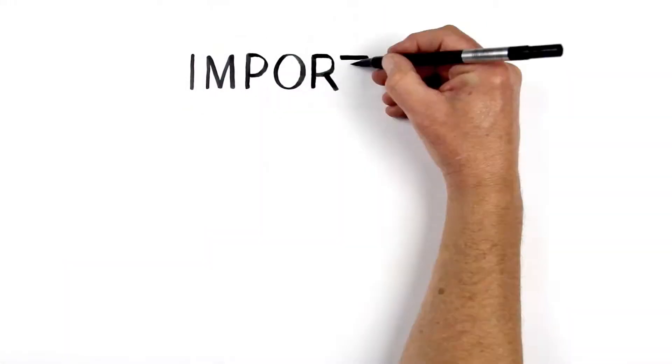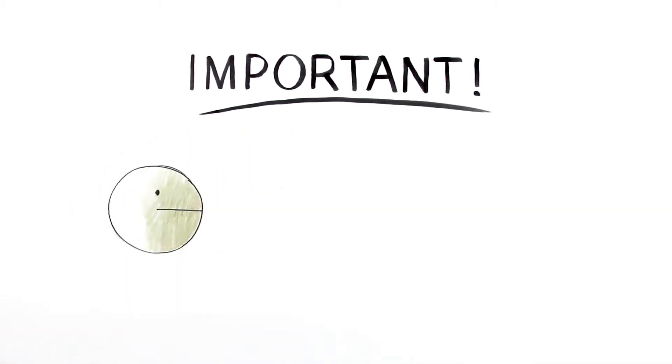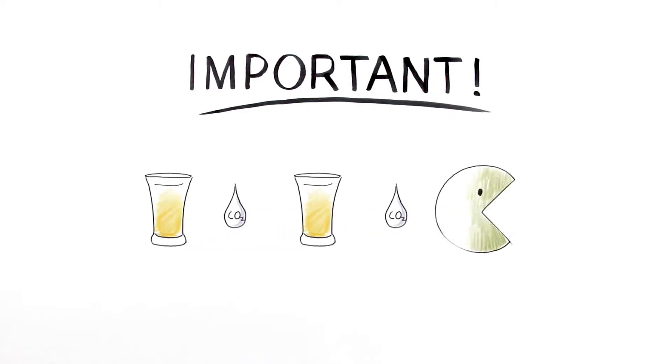Now this is really important. Sugar is what yeast lives on. So we need to make sure that there is enough to keep the yeast metabolising and producing alcohol, carbon dioxide and beer flavour.